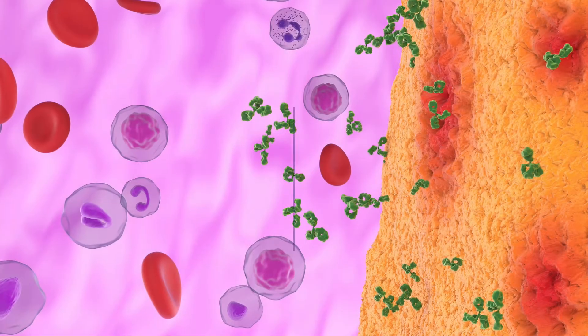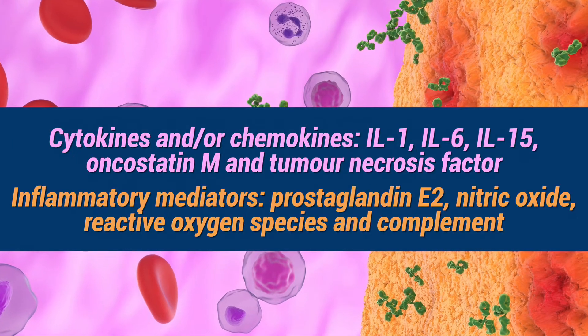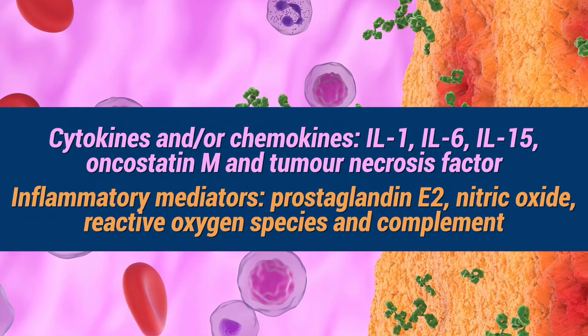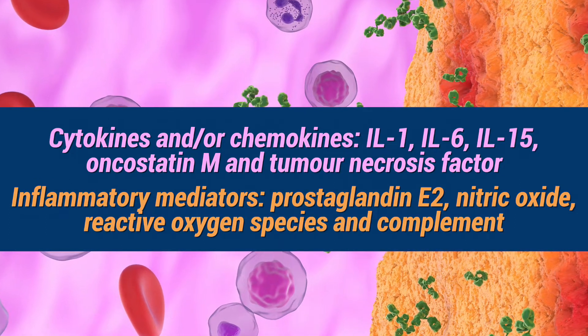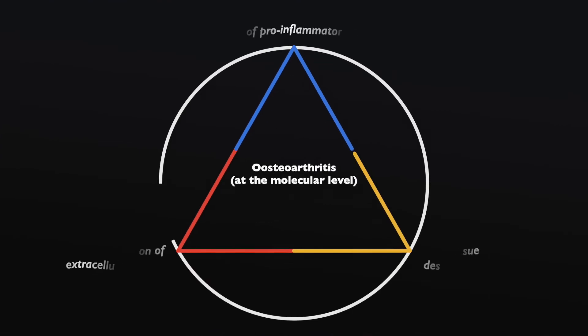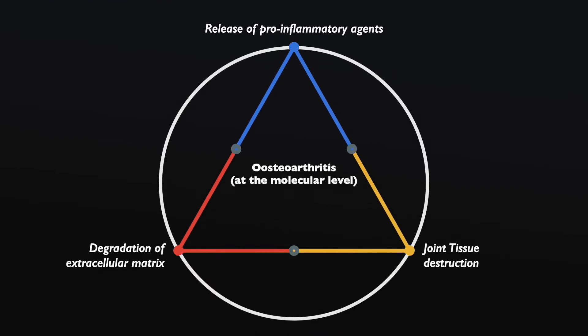To summarise, at the molecular level, OA is characterised by the presence of a host of pro-inflammatory mediators, like cytokines and chemokines, that are part of an innate immune response to joint injury. These pro-inflammatory factors drive the production of proteolytic enzymes, which are responsible for degrading the extracellular matrix, resulting in joint tissue destruction.